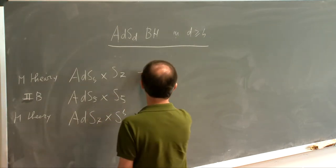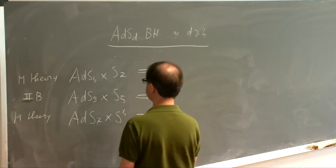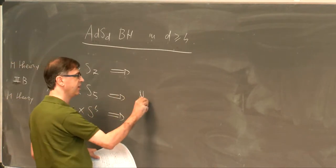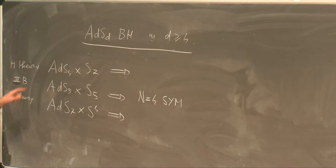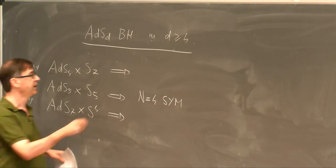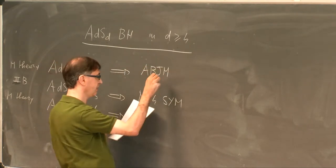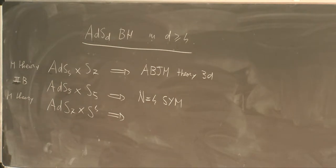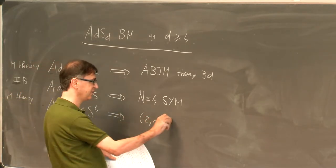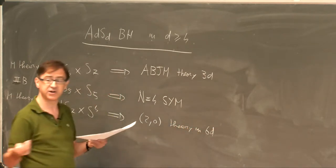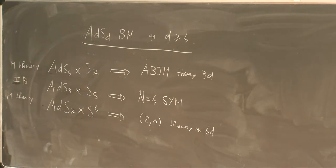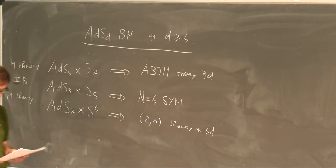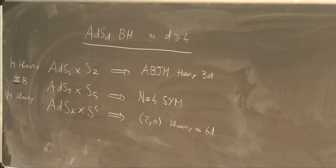For all of these backgrounds, we know what the dual field theory is. This is the basic of the holographic correspondence. ADS-4 times S-7 is dual to ABJM theory, which is a maximally supersymmetric Chern-Simons theory in 3D. ADS-5 times S-5 is dual to N=4 super Yang-Mills. And even for ADS-7, we know the theory — it's the (2,0) theory in six dimensions. It's not Lagrangian, but in some sense it is the mother of all the other theories, since by compactification you can get N=4 and everything else.